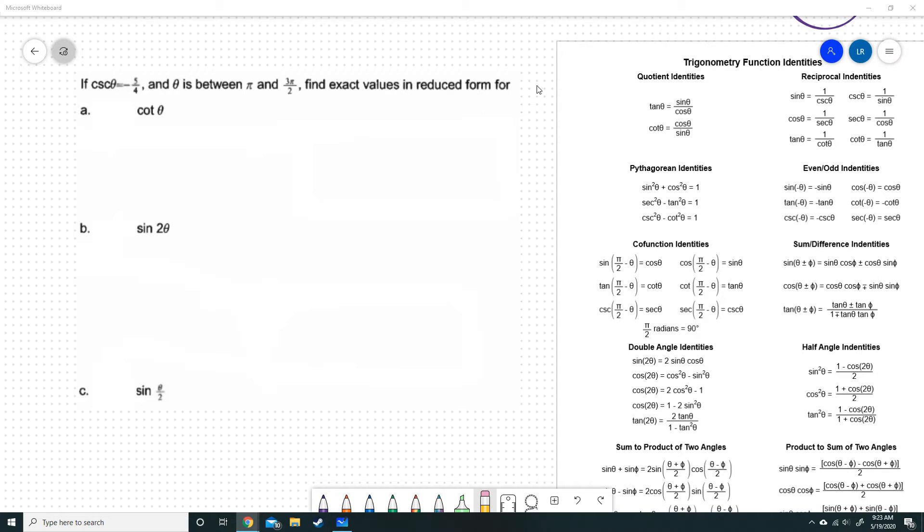There is a lot of information in that sentence. The first thing that we notice is we're using cosecant. Cosecant is the reciprocal of sine, meaning that it is hypotenuse over opposite. The next thing that we see is that cosecant is going to fall here, and pi and 3 pi over 2 is going to be quadrant 3.